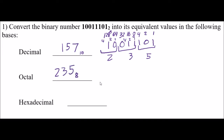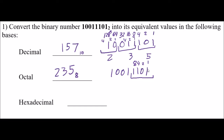Going to hexadecimal — I just group them by 4s. Every 4 binary digits is 1 hexadecimal digit. So I have 1, 1, 0, 1 as my first group. The 1s place, 2s place, 4s place, 8s place — so that's 8, 9, 10, 11, 12, 13. So that is a 13.